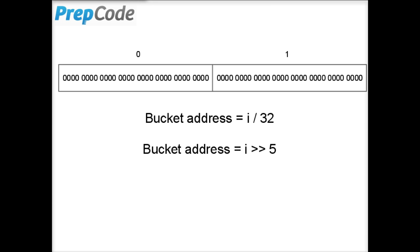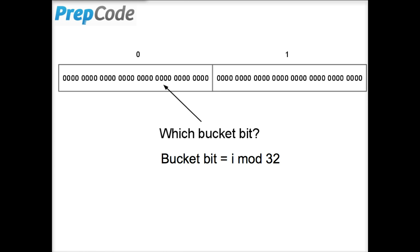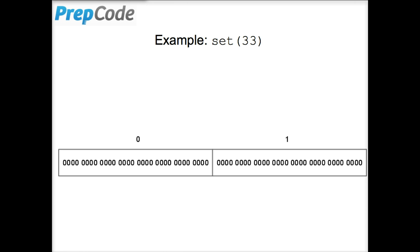Now that we know the bucket, we need to know which bit in the bucket to set. We need to set the bit according to the remainder of i divided by 32. For example, if we want to set the integer 33, then the bucket is 33 divided by 32, and the bit is 33 modulo 32.